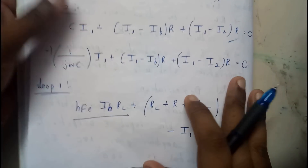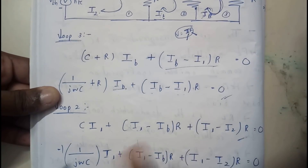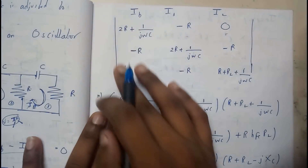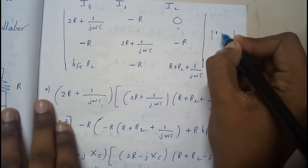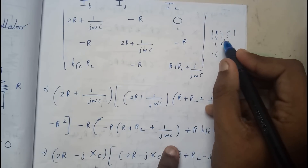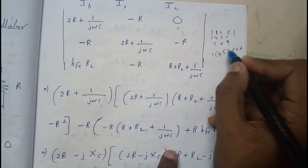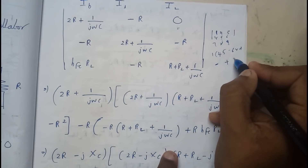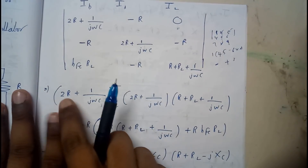Now we will use a matrix to solve for ib, i1, and i2. We place all values into the matrix and substitute zeros where there is no value. The matrix is multiplied internally — numbering positions 1 through 9. For the first set we multiply positions 1×5×9, then subtract 2×6×7, and add 3×4×8, giving the full determinant expansion.